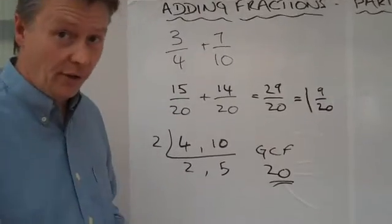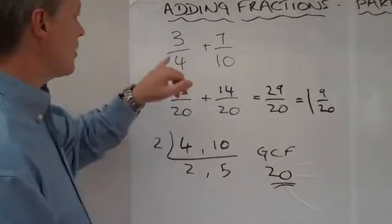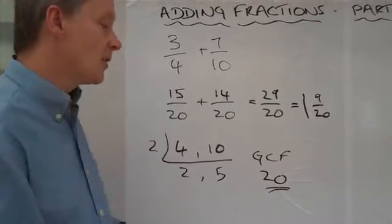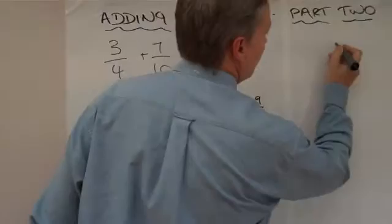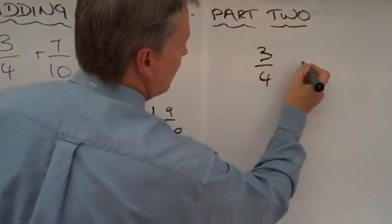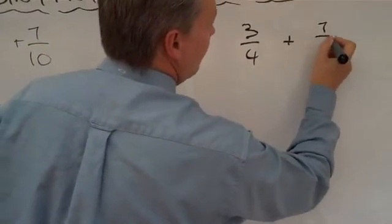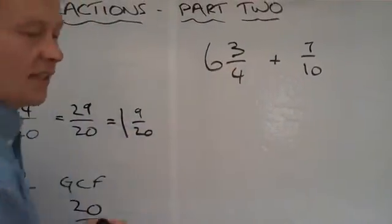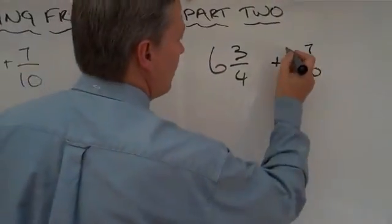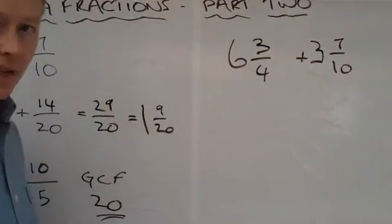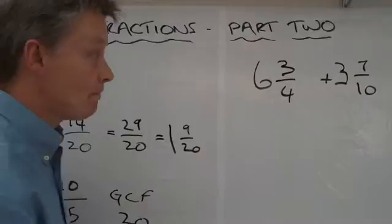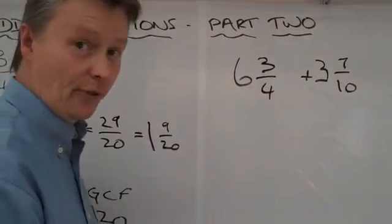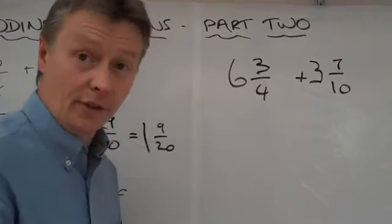Okay, now the other question that we're going to ask today is, I'm going to slightly change that so that I've also got some whole numbers as well. So I'm still going to have 3 quarters, and I'm still going to have 7 tenths, but this time I'm going to say it's 6 and 3 quarters added to 3 and 7 tenths. Okay, well, we know that 3 quarters and 7 tenths is exactly what we've done before. We're going to rewrite it over the number 20.